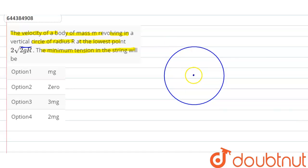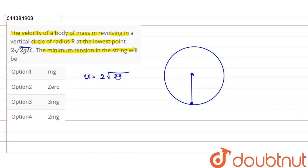First, let's draw a diagram of a vertical circle with a string and mass m revolving in it. The velocity at the lowest point is 2√(2gr), which we can also write as √(8gr). To complete a full vertical circle, the minimum required velocity at the lowest point is √(5gr). Since the given velocity is more than that, this body will complete a full vertical circle.